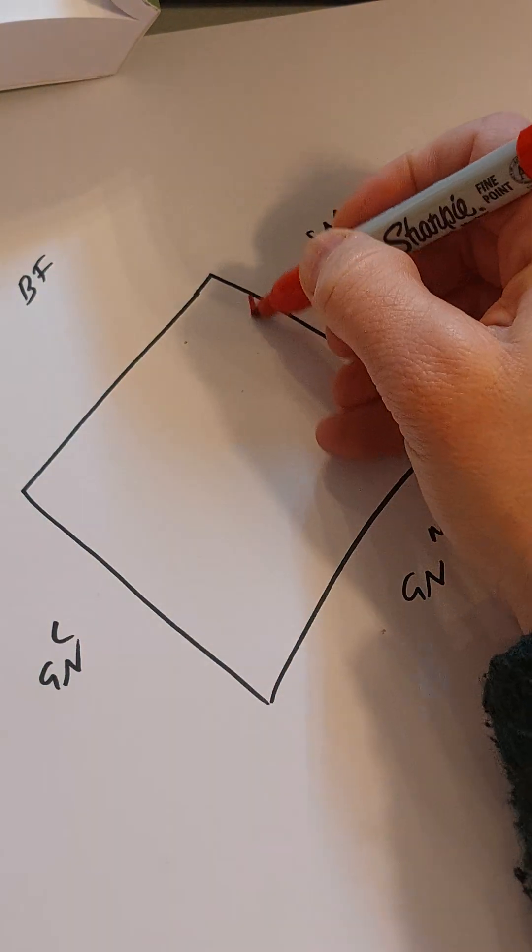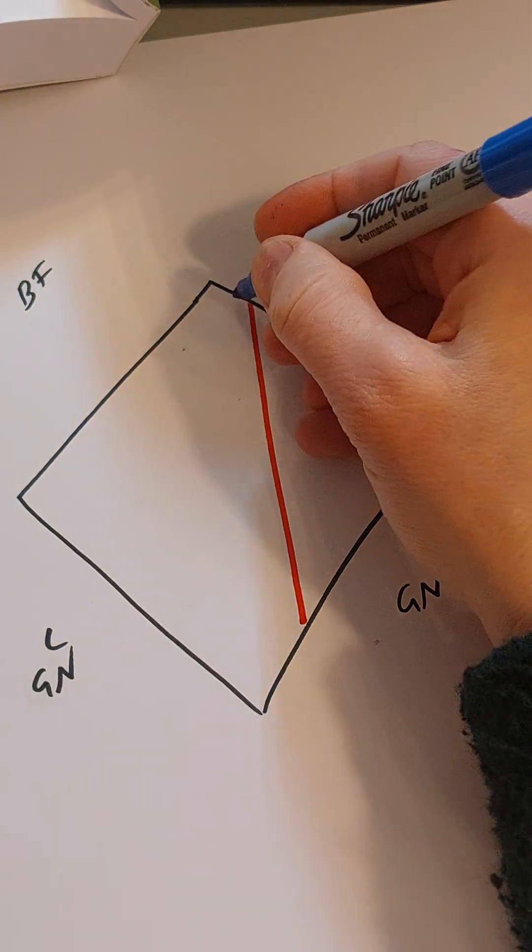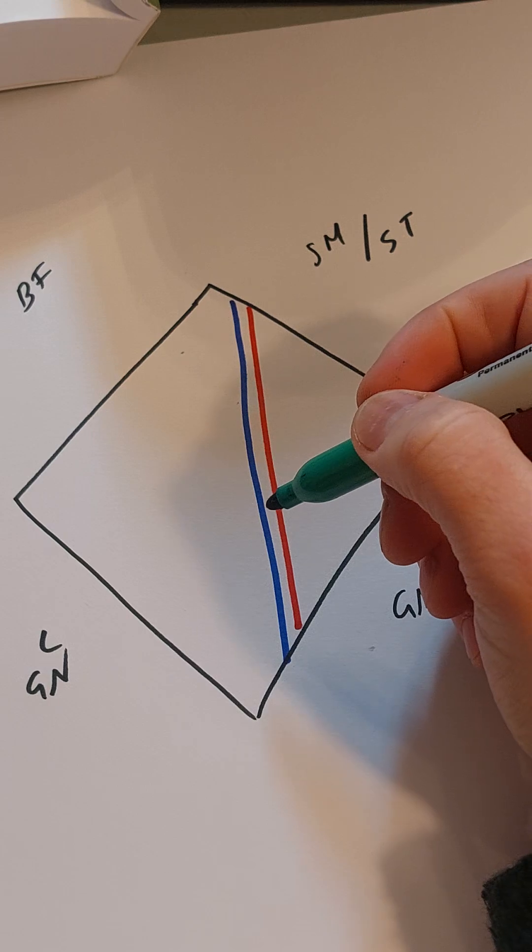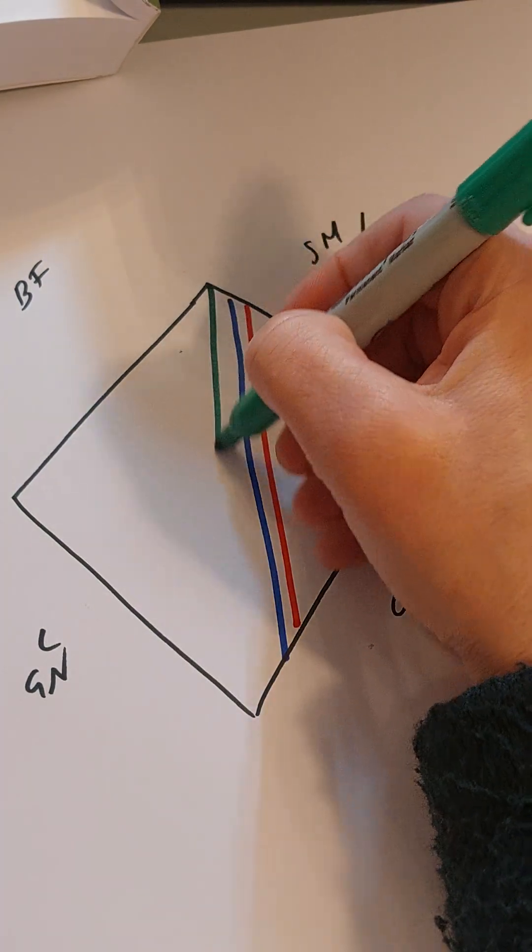So next you have the popliteal artery, the popliteal vein, and then the nerves. Now often the artery and vein lie below the nerve, however in this I draw them next to each other just so you can see them all.